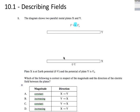We want to know which is correct in respect to the magnitude and the direction of the electric field between the plates. Is the magnitude constant or increasing, and is the direction from X to Y or Y to X?